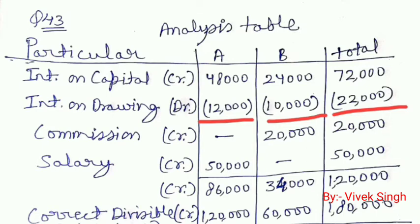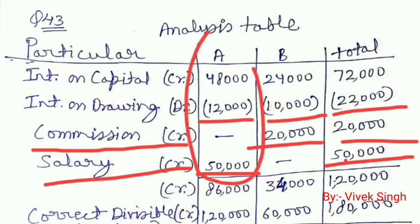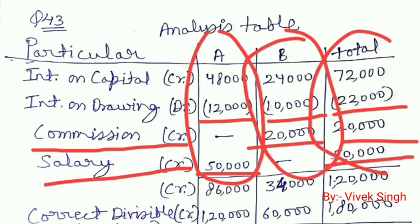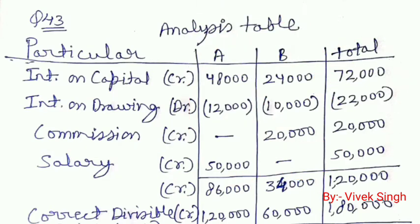Next, the commission given to B on a special transaction is 20,000 — shown in the total column. The salary given to A is rupees 50,000 annually, also shown in the total column. Now we total all these items: for A, the credit total is 86,000; for B, it is 34,000; and the firm's total expense is 1,20,000.